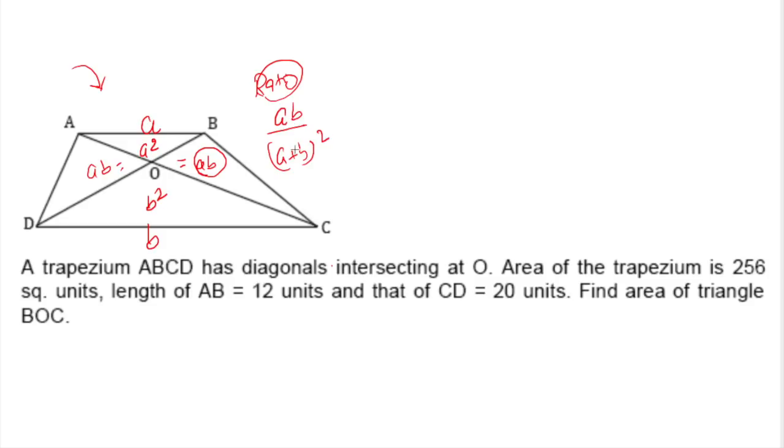We have these values here: this one is 12, this one is 20. So we can say the OBC out of the total trapezium, not the triangle but trapezium ABCD, is in the ratio of 3 times 5, which is 15, out of (3 plus 5) equals 8 squared.